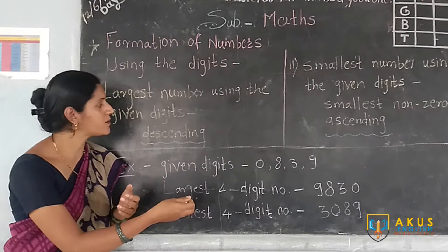Now with the help of one example we will see how to form the largest and smallest number using given digits. Suppose you have been provided 4 digits: 0, 8, 3, 9. Using these 4 digits — each used one time only — you have to form the largest 4-digit number and the smallest 4-digit number. To form the largest 4-digit number, arrange the digits in descending order.